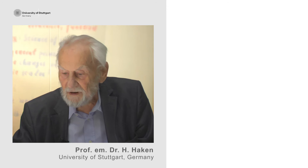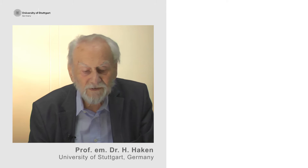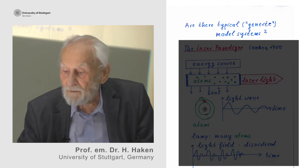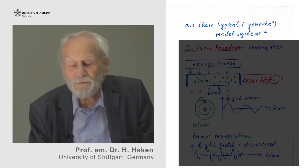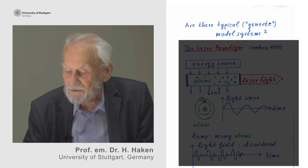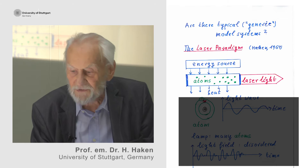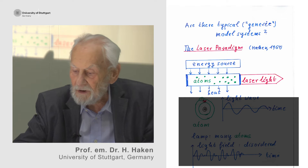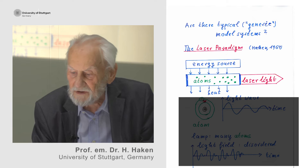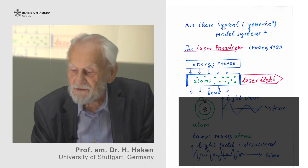Now there is a basic problem: when to start, the question arises — are there typical, or in other words, generic model systems? I was very lucky that 50 years ago, I came across a system that allowed us to look into these questions in considerable detail. The system is the laser, a device that produces laser light. Typically, a laser consists of a crystal rod with mirrors mounted at the end faces. The individual atoms are excited by a light source, an energy source, and eventually laser light is produced.